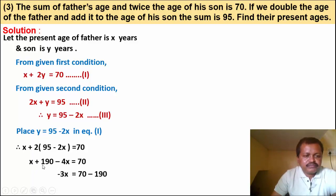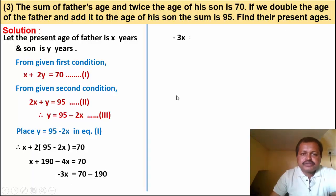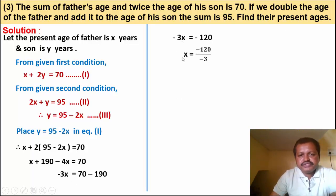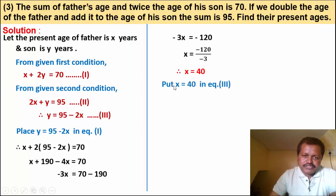So minus 3x equals 70 minus 190, which is minus 120. Simplifying: x equals minus 120 upon minus 3, therefore x is equal to 40.